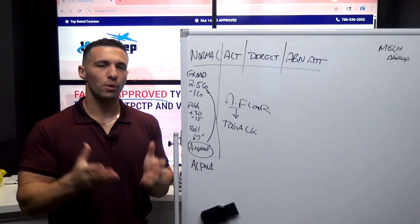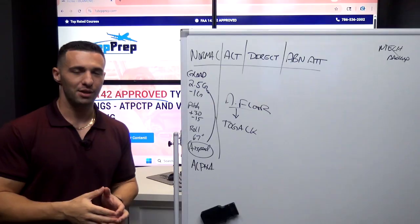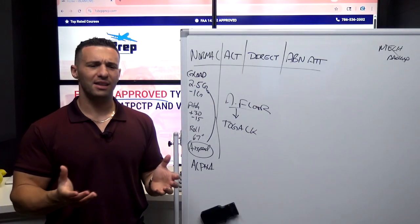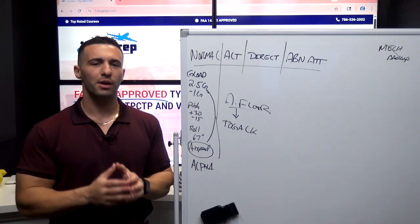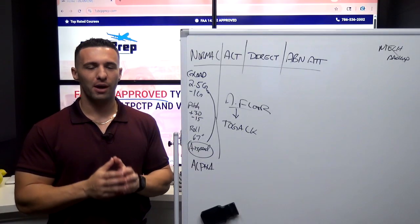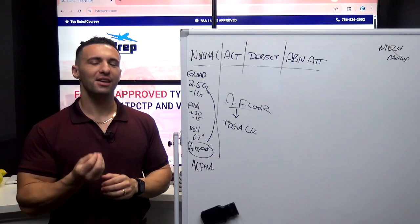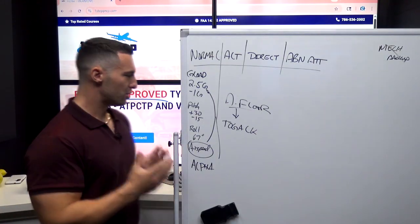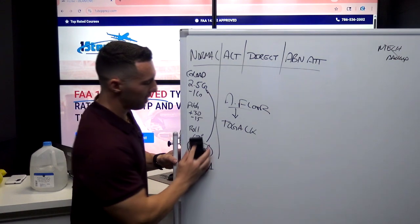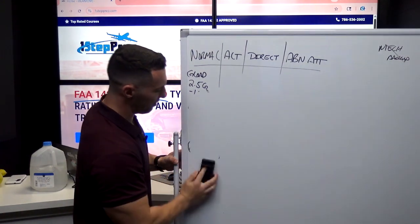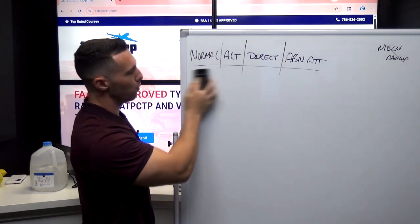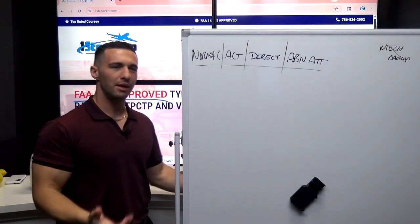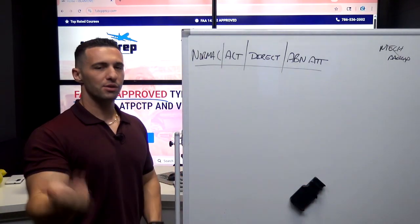So the ground mode in normal law, as you can imagine, is active on the ground. And what exactly is that and why do I need a ground mode? One of the notable things about ground mode is the fact that the side stick relationship is direct. So I want to talk to you now about the side stick and the relationship of what is direct versus G-load versus roll rate. And this whole thing is going to tie right back into why we need it in the various modes from ground to flight to flare.